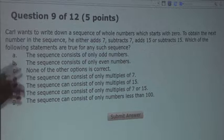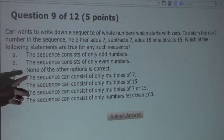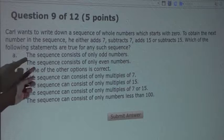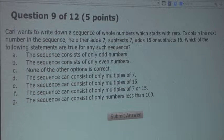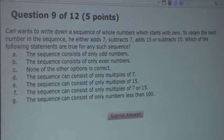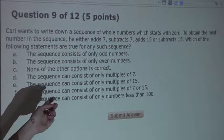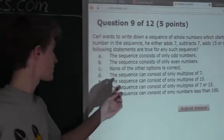Now for one of these options to be correct, the statement would have to be true for any such sequence, which means that even if we found one counterexample sequence against that statement, then the option would be wrong.